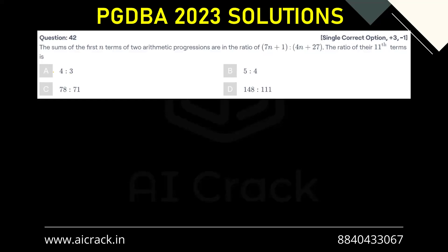Let's solve question number 42. The sums of the first n terms of two arithmetic progressions are in the ratio 7n plus 1 is to 4n plus 27. The ratio of their 11th terms is.